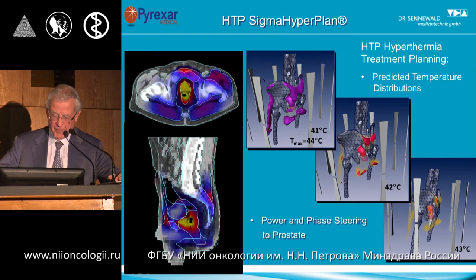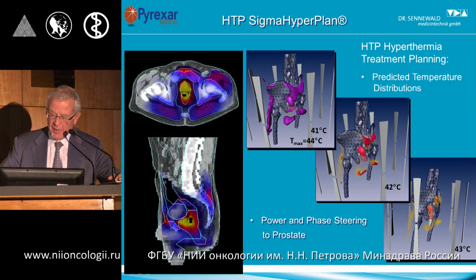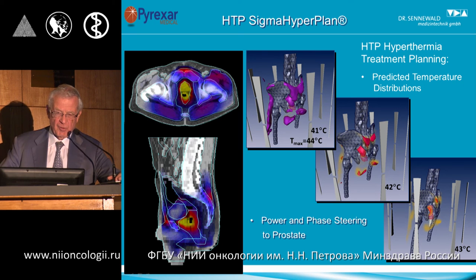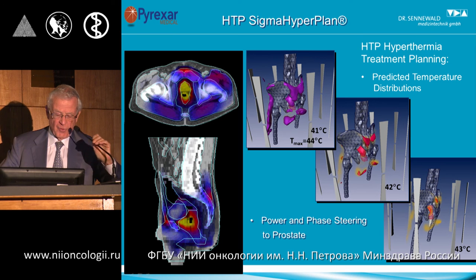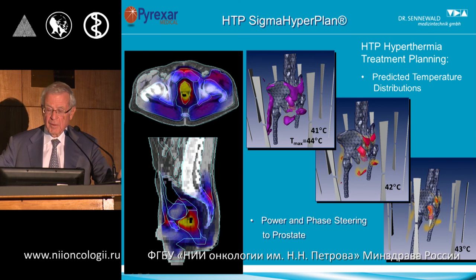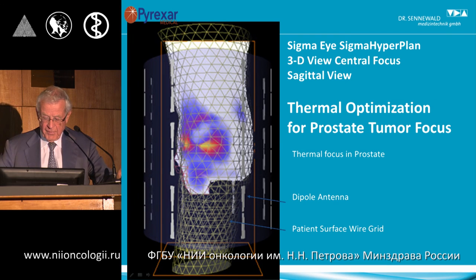This is an example of a hyperthermia treatment plan for a prostate cancer case. The computation grid is a triangular grid that has been modified so that no hand work is needed anymore. You can see the temperature ranges indicated at 41, 42, and 43 degrees, and the last slide shows the optimized treatment plan for the prostate with wire grids.